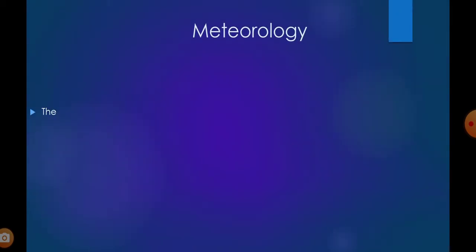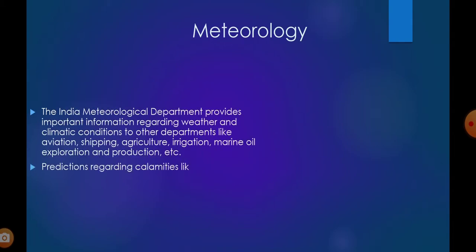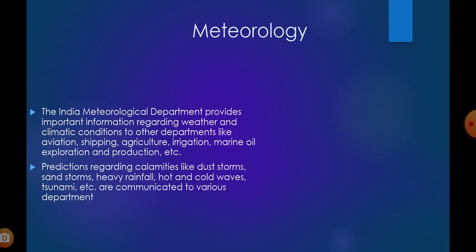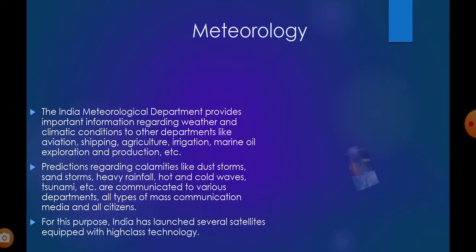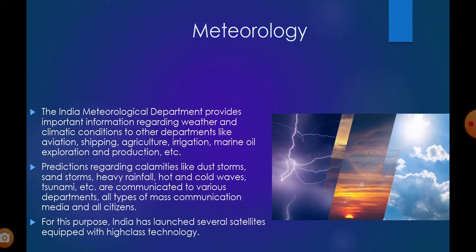The India Meteorological Department provides important information regarding weather and climatic conditions to departments such as aviation, shipping, agriculture, irrigation, and marine oil exploration and production. Predictions regarding calamities like dust storms, heavy rainfall, hot and cold waves, and tsunami are communicated to various departments, mass communication media, and all citizens. For this purpose, India has launched several satellites equipped with high-class technology.